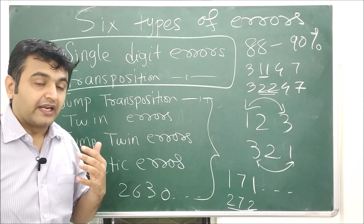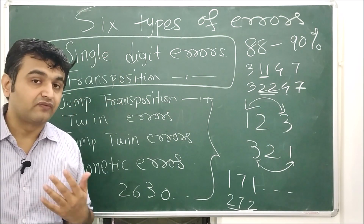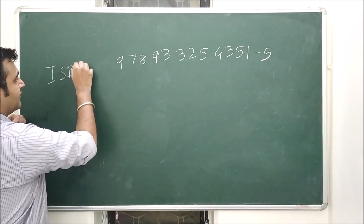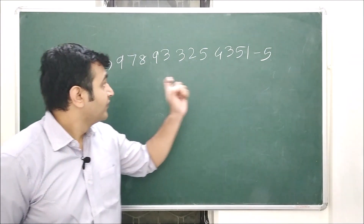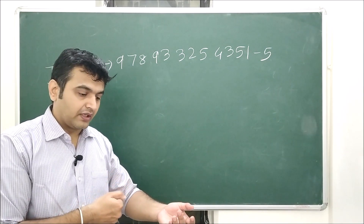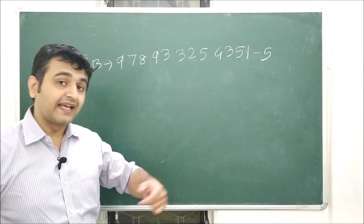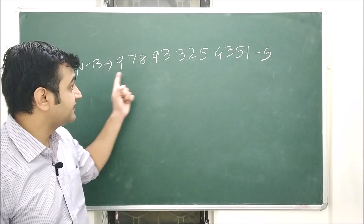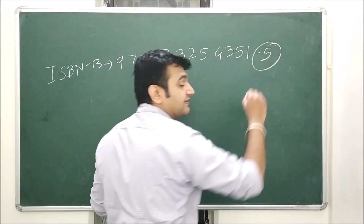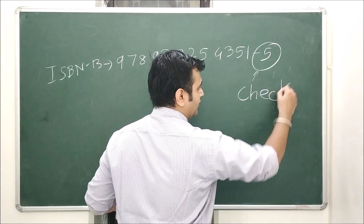Whenever we try to make an algorithm, we should make sure it can detect these errors. If it can't detect these errors, then our algorithm is of no use. So how do you check the validity of a barcode number? This is an ISBN 13 number — a 13-digit barcode number of a book. If a scanner scans this barcode, how does it know whether to give a green light or a red light? The last digit plays a very important role in the validity of a barcode number, and this last digit is called the check digit.